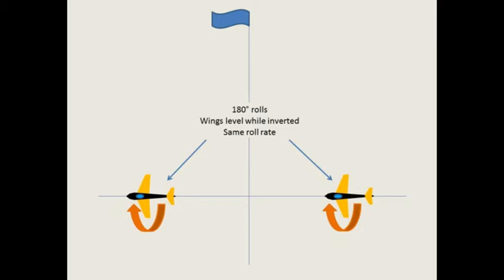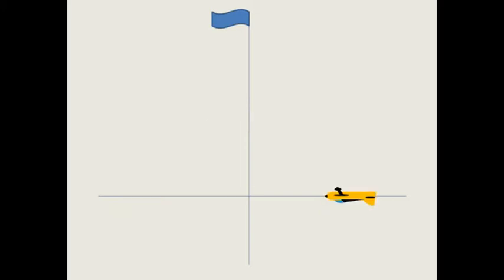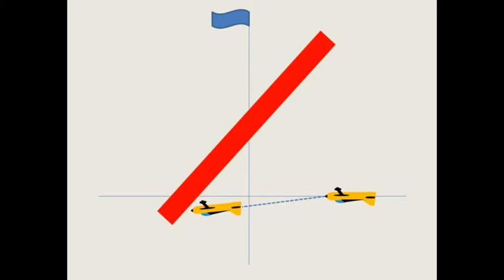And the rolls must be at the same roll rate. The rolls must not change height or flight path. The flight path should not change height, and the flight path should not change direction.